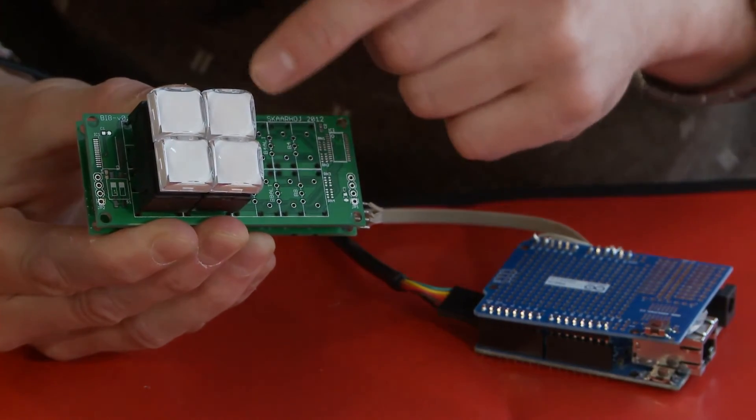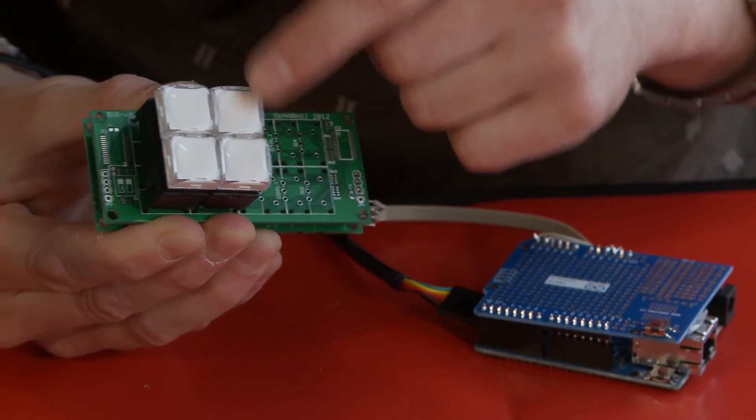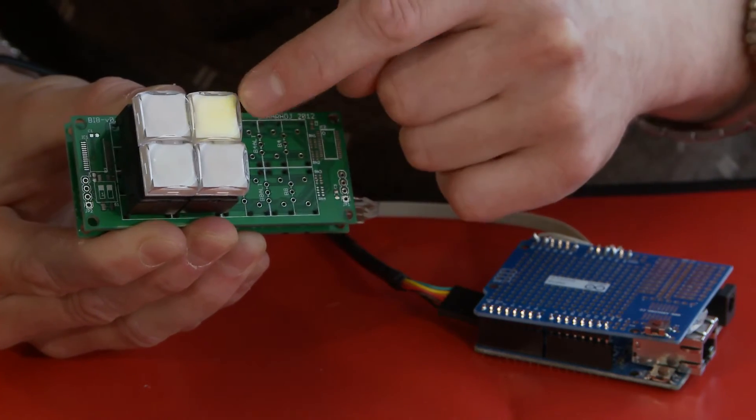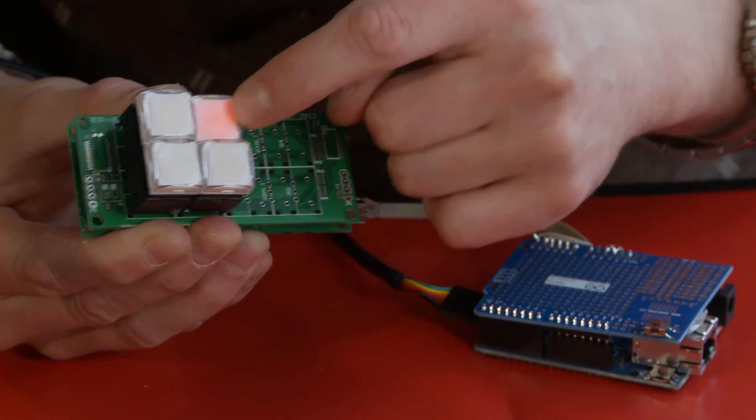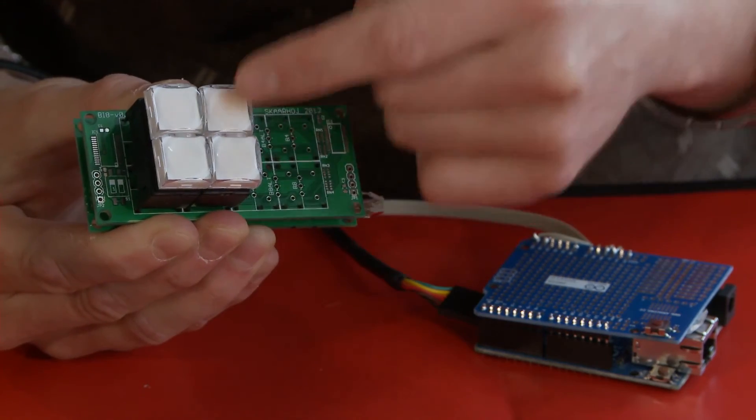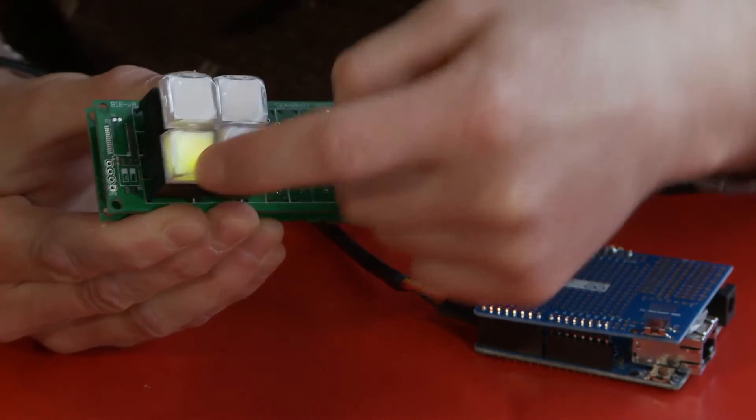I can make a manual test by pressing each button several times and it will go through all of the colors. And you can see that it is going yellow, red, green, orange and then off. And this goes for all of the buttons.